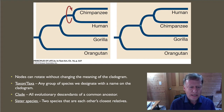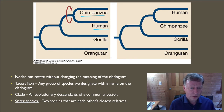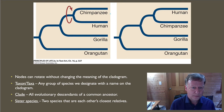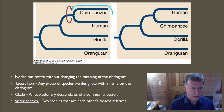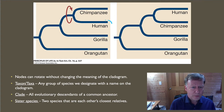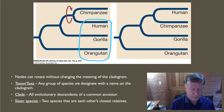A taxon or taxa is any group of species designated with a name on the cladogram — in this case, chimpanzees, humans, gorillas, and orangutans are all different taxa. A clade includes all the evolutionary descendants of a common ancestor. For example, humans and chimpanzees are members of the same clade because they share a common ancestor. Humans, chimpanzees, and gorillas also form a clade. However, humans, gorillas, and orangutans are not a complete clade, because chimpanzees — who share that common ancestor — are being left out. A clade must include all evolutionary descendants of a single common ancestor.